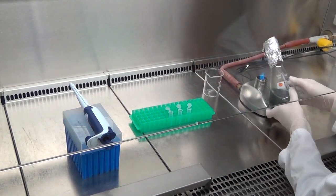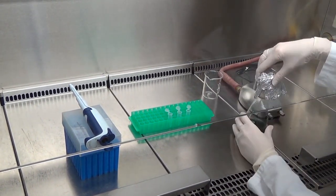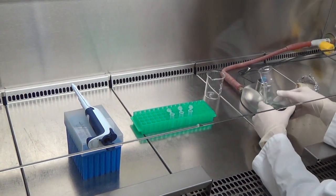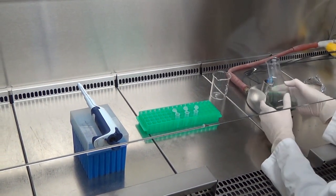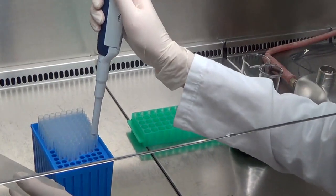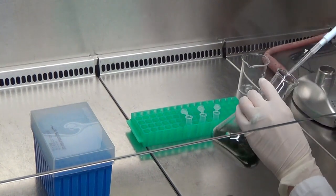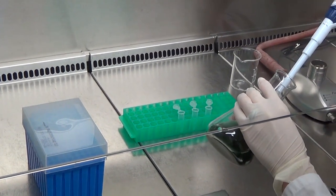At the beginning of the phycobiliprotein extraction, transfer 1 ml of cyanobacterial culture to a safe-lock tube. If you decide to determine dry weight of the samples, weigh the empty tubes before culture sampling. Be sure that the culture is not sedimented.